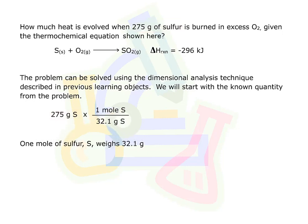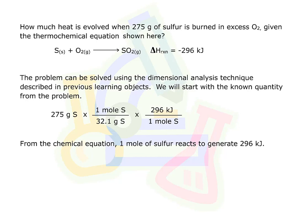One mole of sulfur weighs 32.1 grams. From the chemical equation, one mole of sulfur reacts to generate 296 kilojoules. The units cancel out. The answer is in kilojoules. 2,450 kilojoules of heat are evolved. This is a negative delta H value.